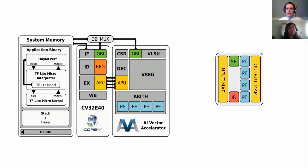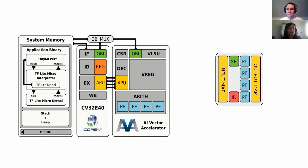We now discuss how the CV32e40p can be extended with the vector accelerator. The CV32e40p processor core is verified and known to be reliable. Therefore, to avoid introducing more bugs, this design avoids modification to the CPU core wherever possible. The added vector instructions are executed on a dedicated accelerator which is designed to be as independent from the CPU as possible. Instructions are dispatched between the CPU and the accelerator through a dedicated interface, and the accelerator contains its own decode logic, registers, arithmetic logic, and memory access logic.